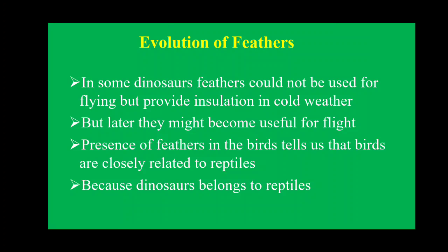The second example is evolution of feathers. In some dinosaurs, feathers could not be used for flying but provided insulation in cold weather, protecting the animals from cold. So primitive organisms used feathers for protection against cold weather, not for flying. Dinosaurs had feathers, but those feathers were not useful for flight. Later, feathers might have become useful for flight, as we can see in birds, which use their feathers for flying.